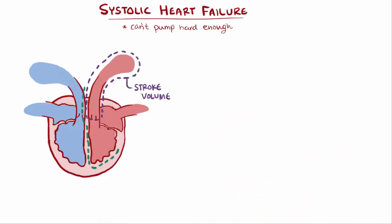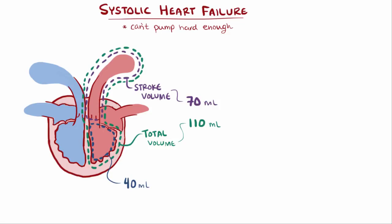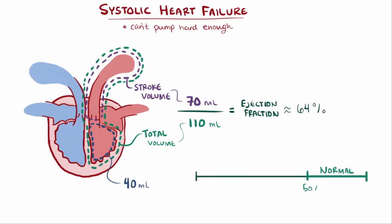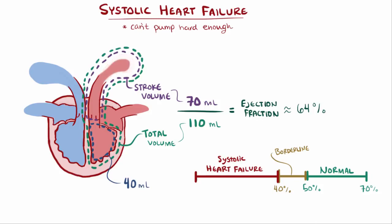Notice that not all of the blood was pumped out — the stroke volume is only a fraction of the total volume. The total volume might be closer to 110 milliliters, and 70 milliliters is the fraction ejected out with each beat, while the other 40 milliliters lingers in the left ventricle until the next beat. In this example, the ejection fraction would be 70 milliliters divided by 110 milliliters, or about 64%. A normal ejection fraction is around 50–70%, between 40–50% would be considered borderline, and anything 40% or less would indicate systolic heart failure, because the heart's only squeezing out a little bit of blood each beat.